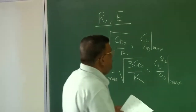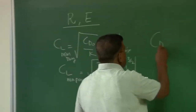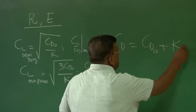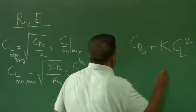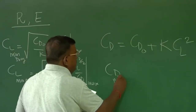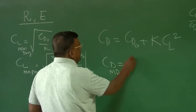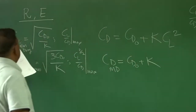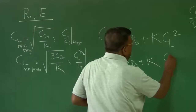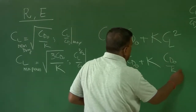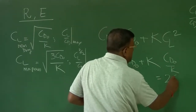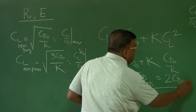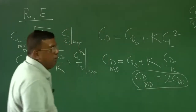If CL required for minimum drag is sqrt(CD0/K), you know that this corresponds to (CL/CD)_maximum, and CL = sqrt(3·CD0/K) corresponds to (CL^(3/2)/CD)_maximum. Now let us play around with this. If I write CD = CD0 + K·CL², then CD for minimum drag is CD0 + K·(CD0/K) = 2·CD0. So CD for minimum drag is 2·CD0 — this is nothing new.